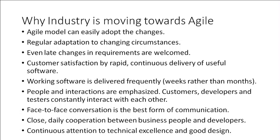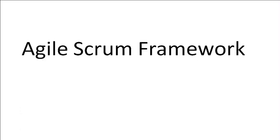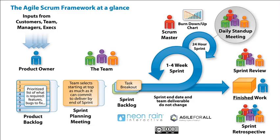Let us discuss this model, known as the agile scrum framework. The first key feature is how we gather requirements from the client, because the first feature of any model is how we collect client requirements. For that purpose, we have a new entity known as the product owner. The product owner is a person responsible for collecting all types of requirements from the client.